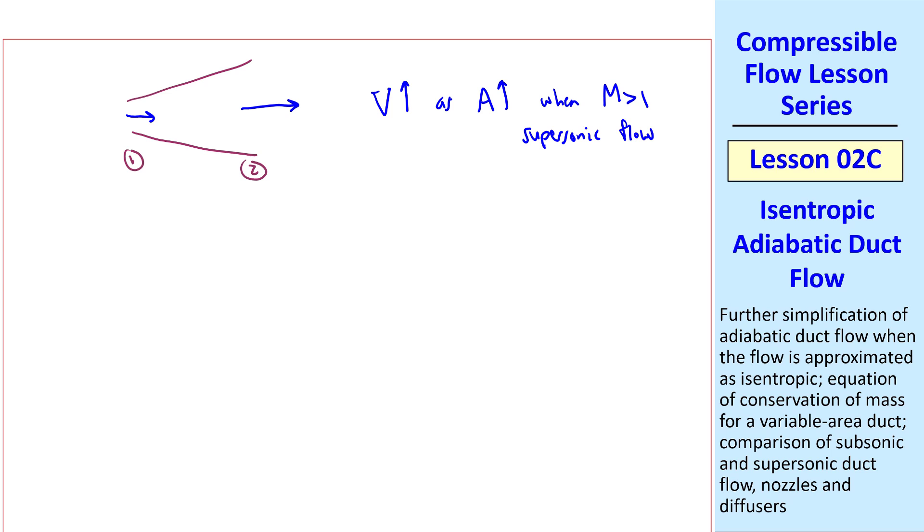How can we conserve mass if the speed goes up as A goes up? Well, the key is that the density has to go down fast enough to overcome the fact that V goes up.